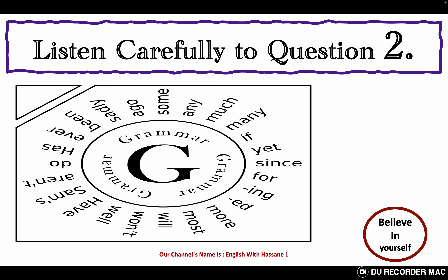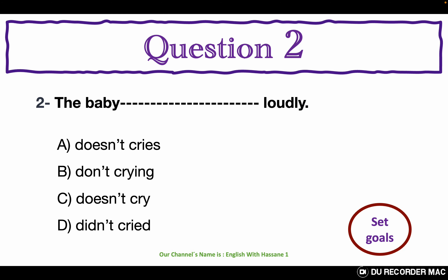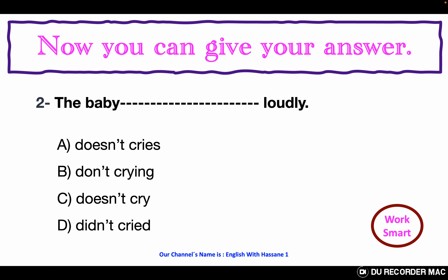Listen carefully to question two. All the questions of this grammar test are in the present simple negative. Choose the best answer A, B, C, or D. The baby ___ loudly. A. Doesn't cries. B. Don't crying. C. Doesn't cry. D. Didn't cried. Now you can give your answer.